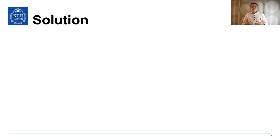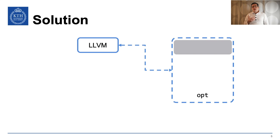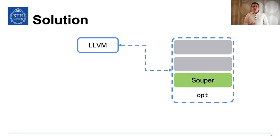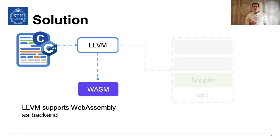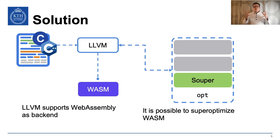There exist several super-optimizer implementations, and one of these is Super — a super-optimizer for LLVM, presented as an optimizer integrated into the standard LLVM compilation toolchain. This means that any program compiled using the LLVM toolchain can also be super-optimized. Also, since version 8, WebAssembly is supported in LLVM as a backend platform, meaning that any program compiled through an LLVM front-end can also be compiled to WebAssembly. So here we put it all together: the super-optimizer for LLVM and the final target, WebAssembly.